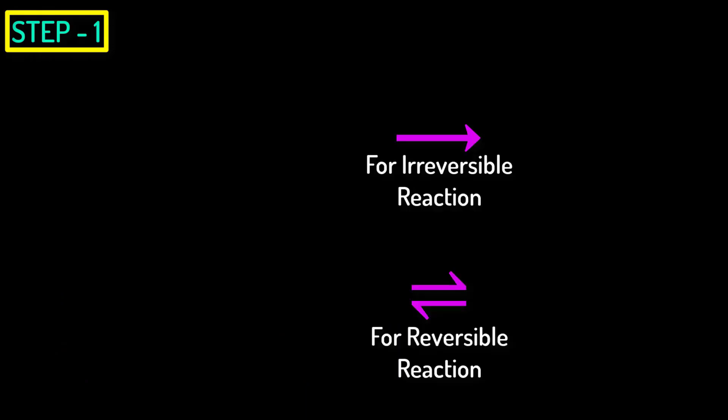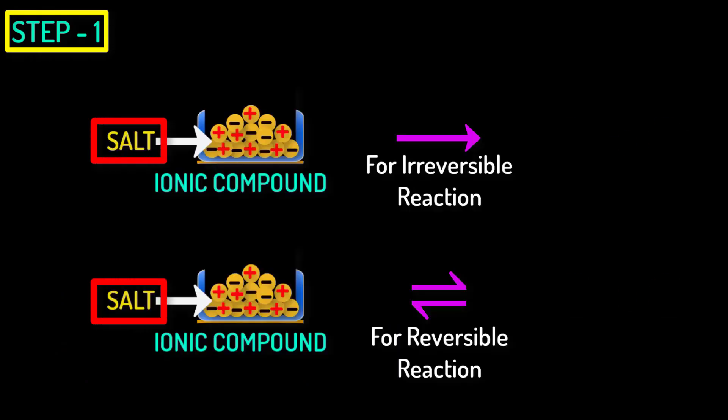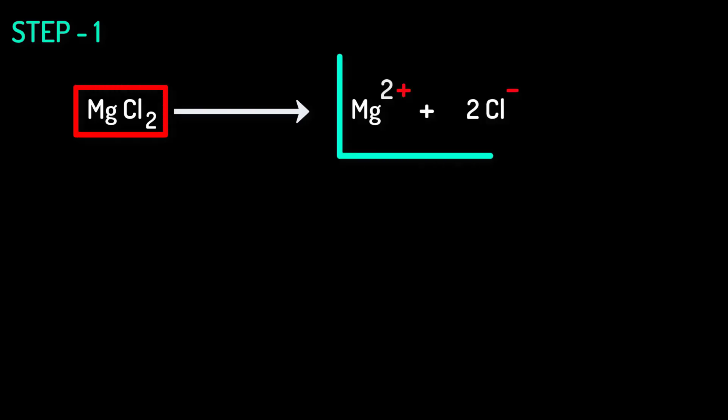Step 1. In step 1 we will always dissociate the given ionic compound into ions before determining the value of KIP. Suppose we are given magnesium chloride to calculate its KIP value. Then what will we do first? We will dissociate magnesium chloride into ions like this.